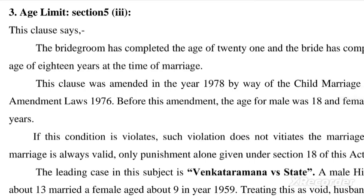This clause was amended in the year 1978 by the Child Marriage Restraint Amendment Act 1976. Before this amendment, the age of the male was 18 and the female was 15 years. If this condition is violated, such violation does not vitiate the marriage — the marriage remains valid — but punishment alone is given under section 18 of this Act.